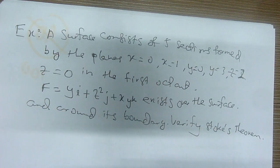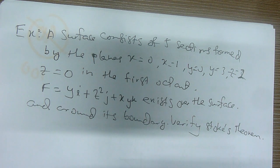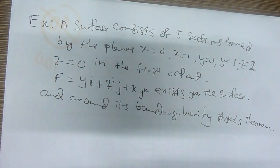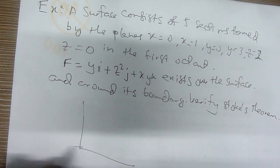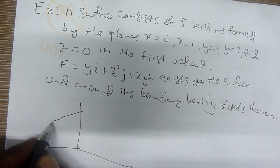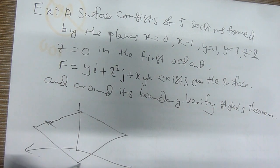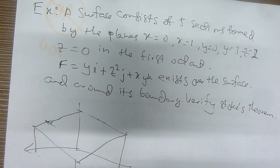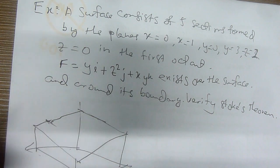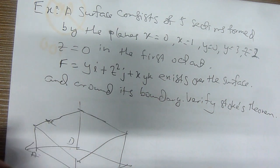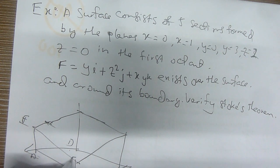Here the surface consists of 5 sections formed by the planes. Now the analysis again — a similar analysis we are going to sketch. We can see the examples labeled A, B, C, D, E, F, G, H. This is Z, this is Y, this is X.